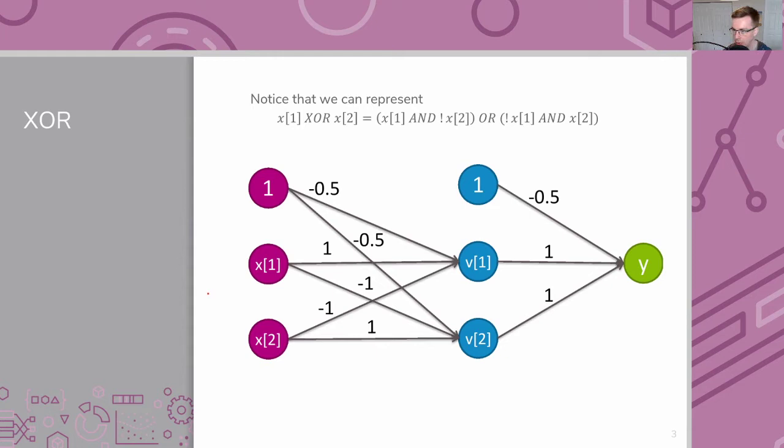We talked about how each neuron will learn its own set of weights to help kind of work in this big orchestra of making the overall prediction Y the correct possible value, and we need to learn many, many weights in order to make that work. In this small example, we have to learn nine different weights to make this work.